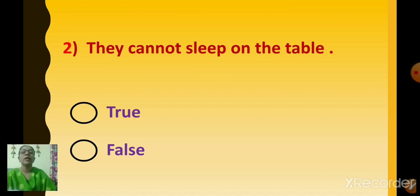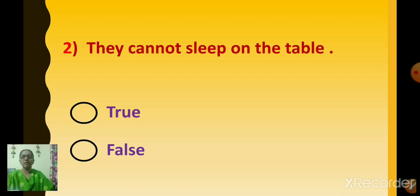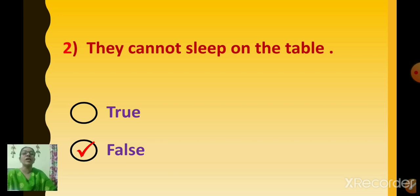Next one, number two: They cannot sleep on the table. 'They' means the cat. Cat cannot sleep on the table — is it true or false? False. The cat can sleep on the table, but here it says the cat cannot sleep on the table, so the statement is wrong. You are going to click on false.